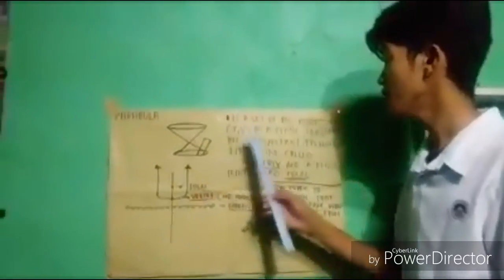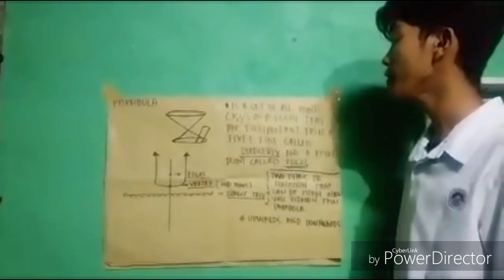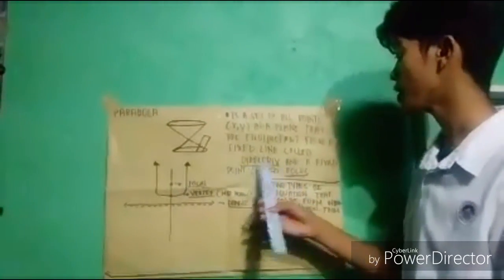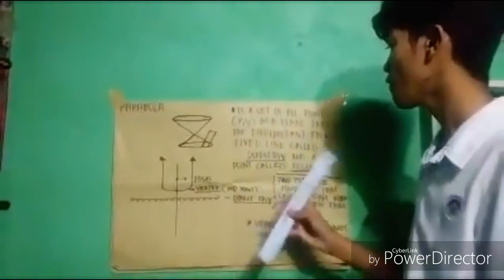Parabola is a set of all points x, y in a plane that are equidistant from a fixed line called the directrix and a fixed point called the focus.